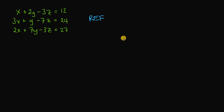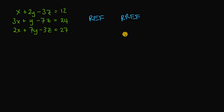Gauss-Jordan is a way to obtain a matrix that is in reduced row echelon form. The special thing about Gauss-Jordan elimination and reduced row echelon form is that the values in the last column of our matrix are our solution for the system of linear equations.